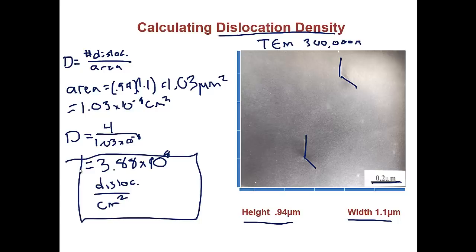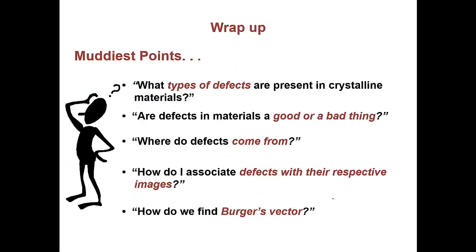This wraps up the video. Let's go back to our muddiest points. What types of defects are present in crystalline materials? Check. Are defects in materials a good or a bad thing? Check. Where do defects come from? Check. How do I associate defects with their respective images? Check. And how do we find Burgers vector? Check. Thank you very much for watching.